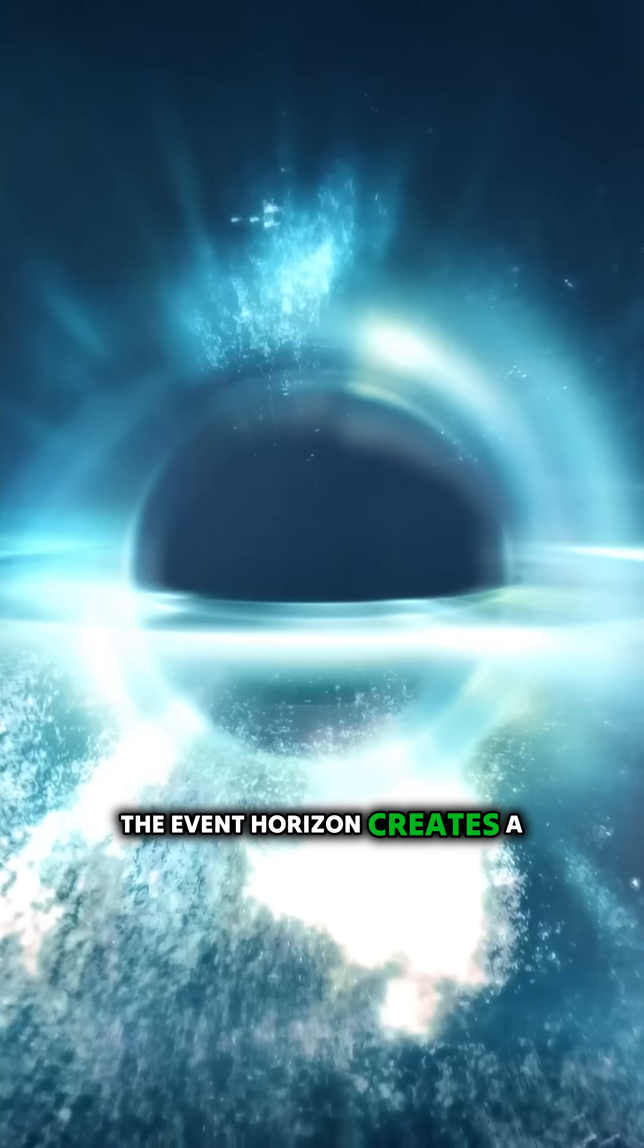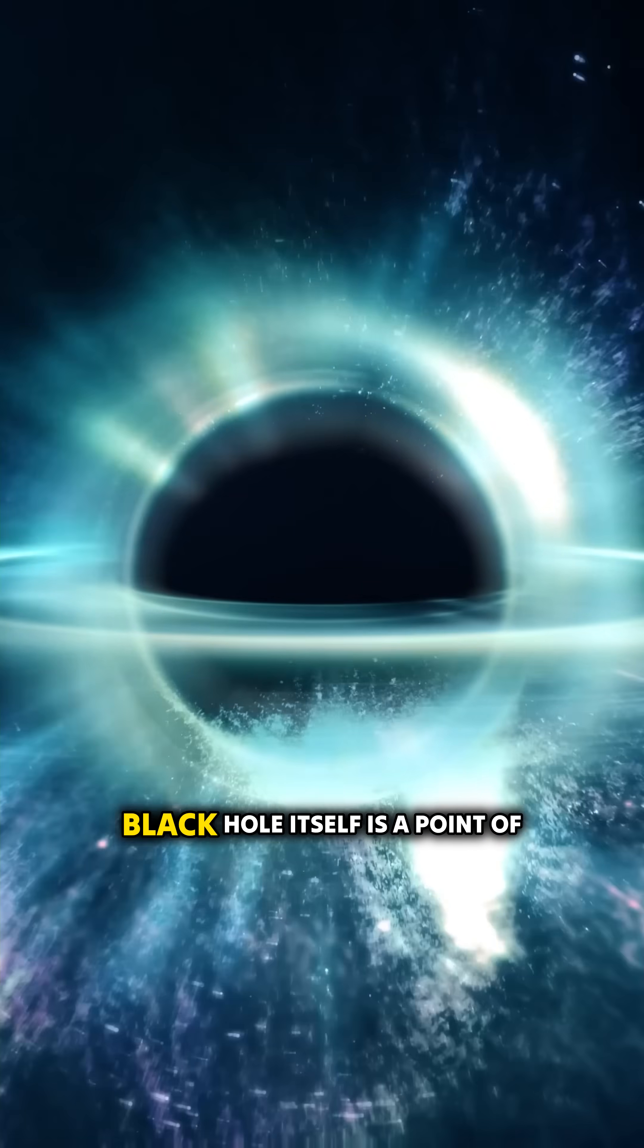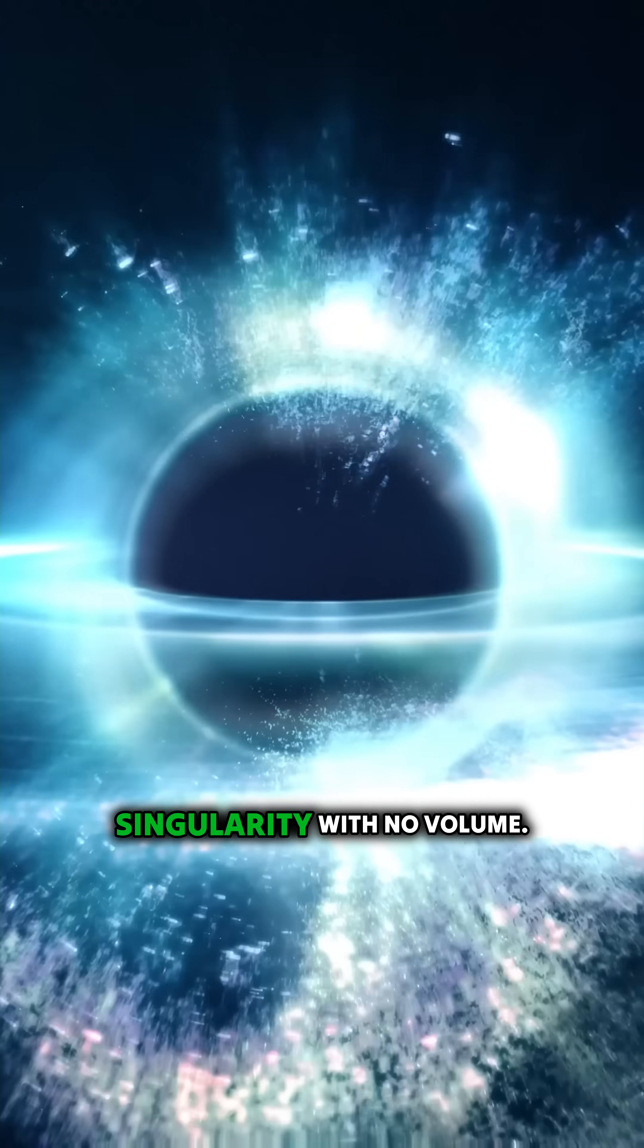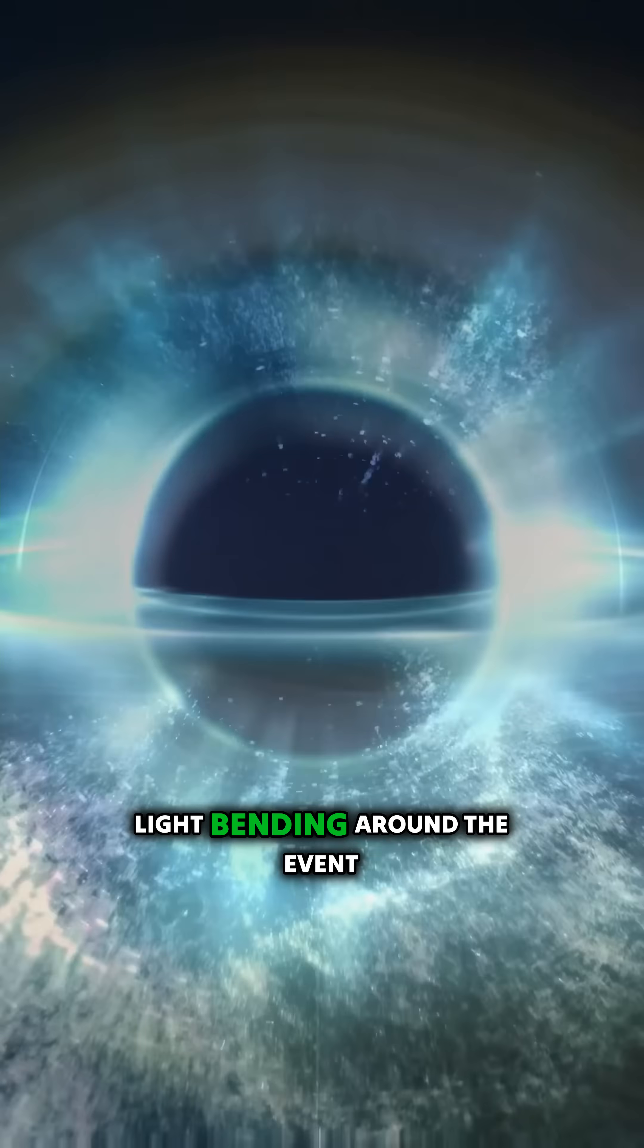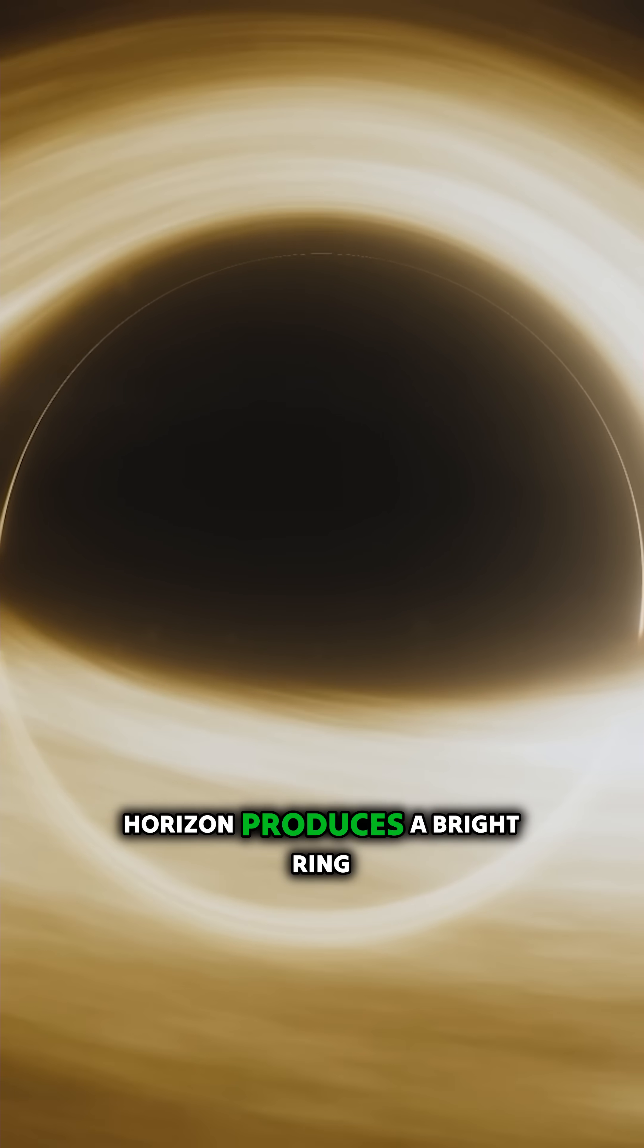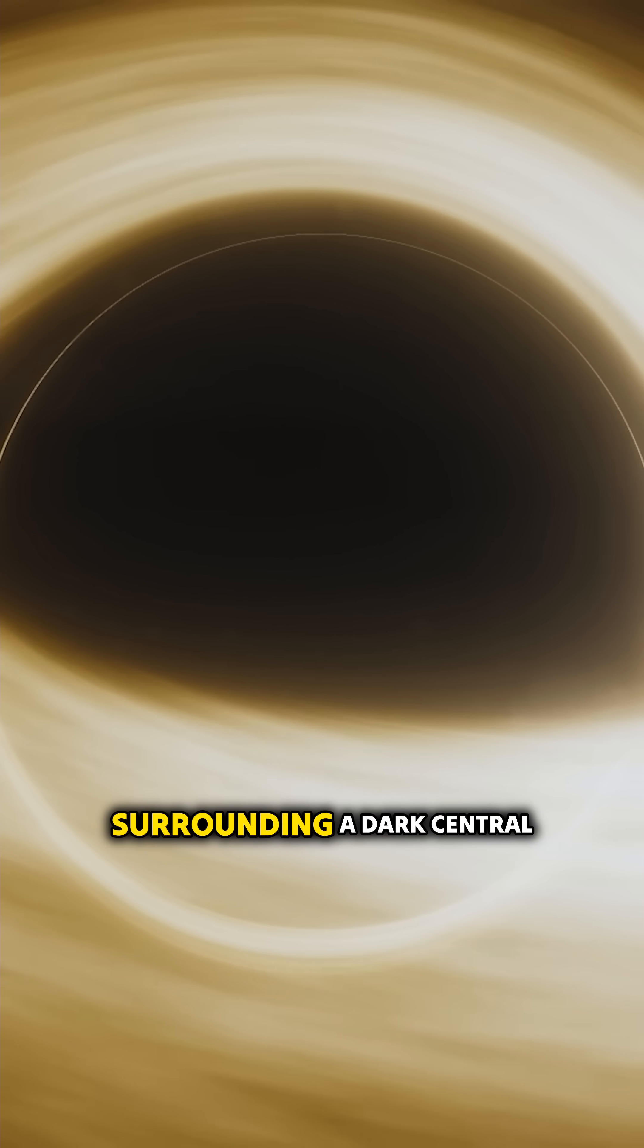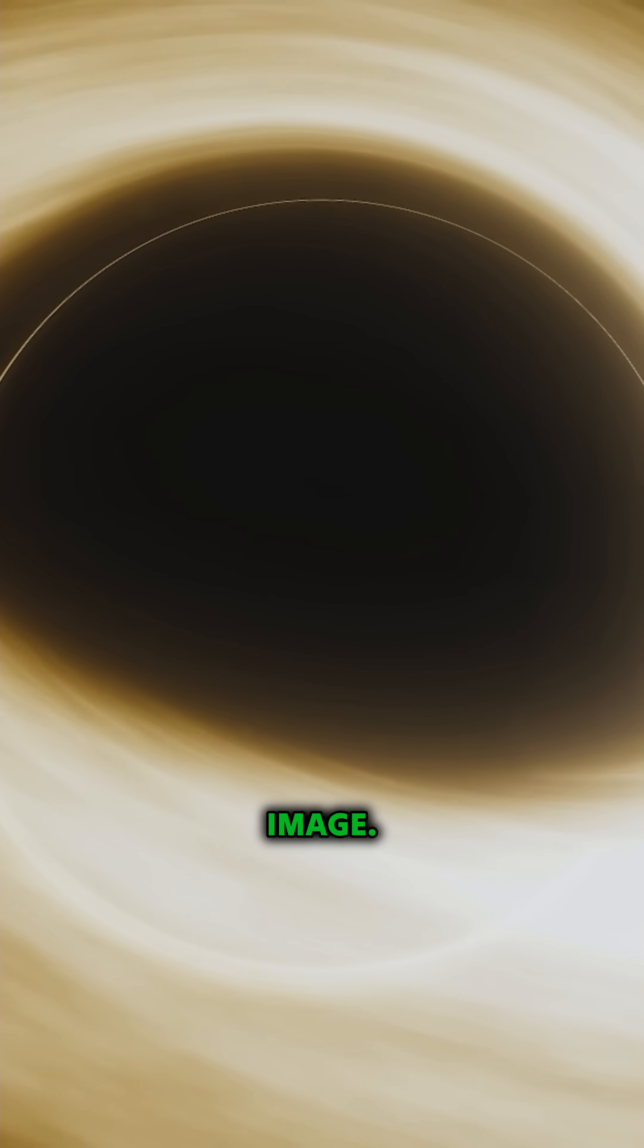The event horizon creates a spherical area in space, while the black hole itself is a point of singularity with no volume. Light bending around the event horizon produces a bright ring surrounding a dark central region, which is how the black hole's shadow is depicted in the M87 image.